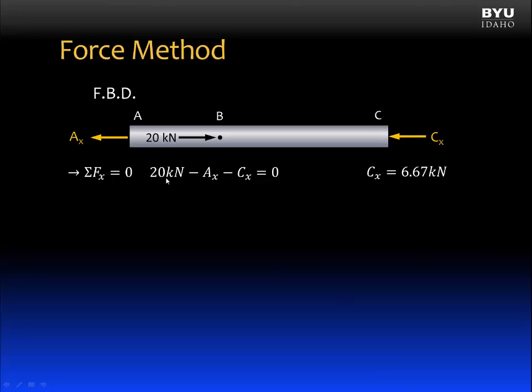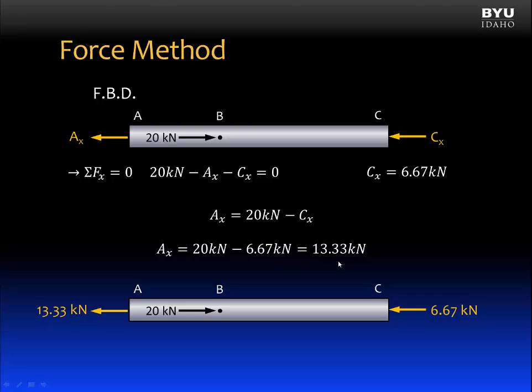Going back to the free body diagram that we drew before, we can substitute Cx as 6.67 kilonewtons and solve this equation for Ax. And Ax is equal to 13.33 kilonewtons. And here I can draw a completed free body diagram. Using our equation of compatibility, we were able to write a new equation to add to our equation of static equilibrium that gave us enough equations to solve for our unknown reactions.